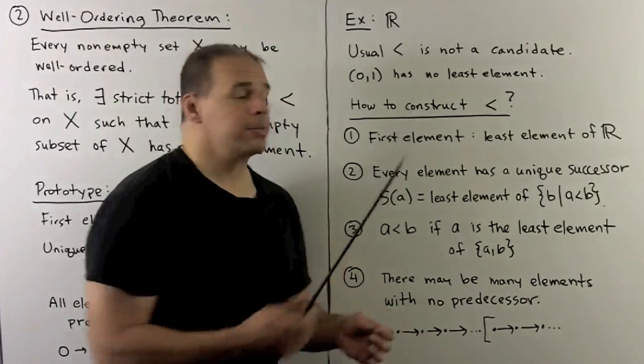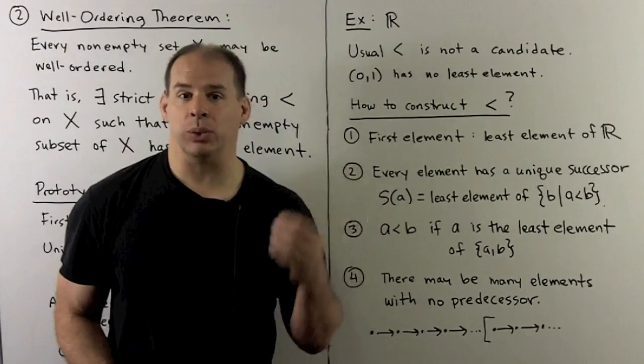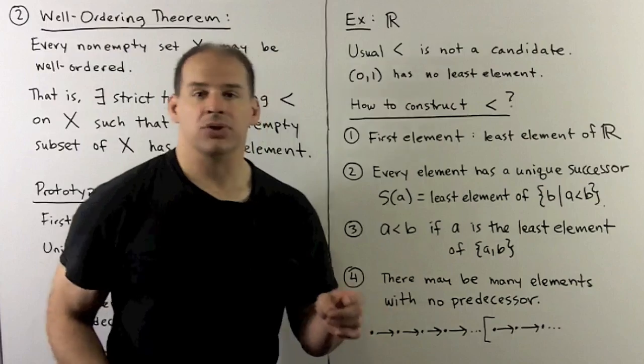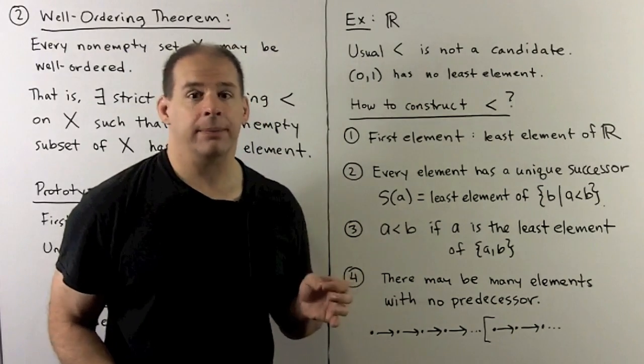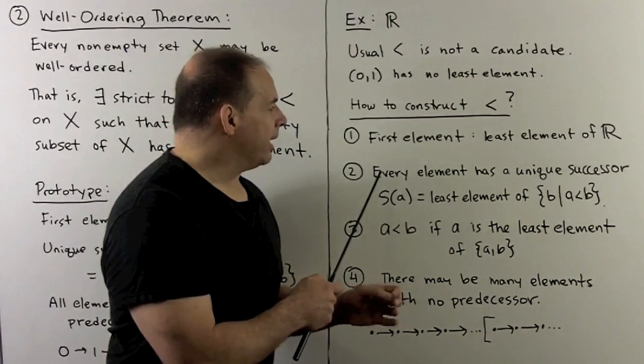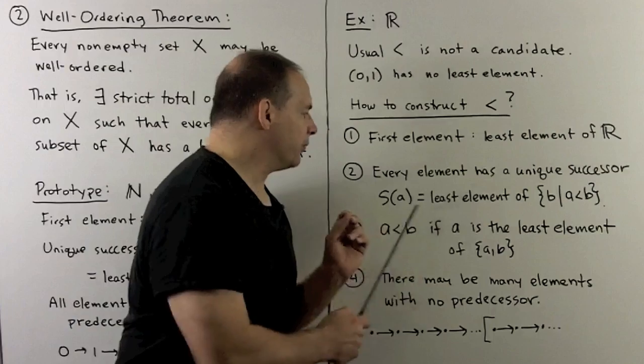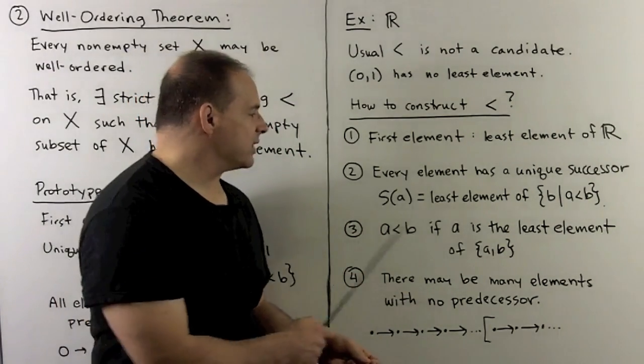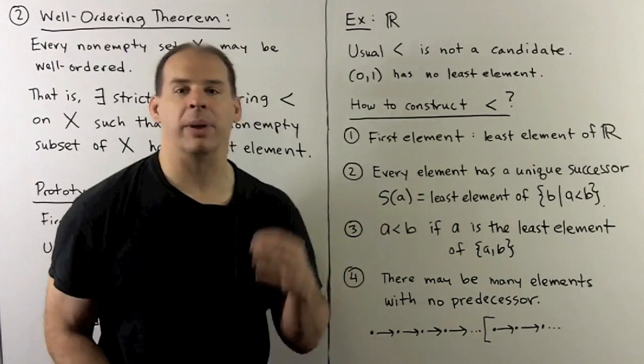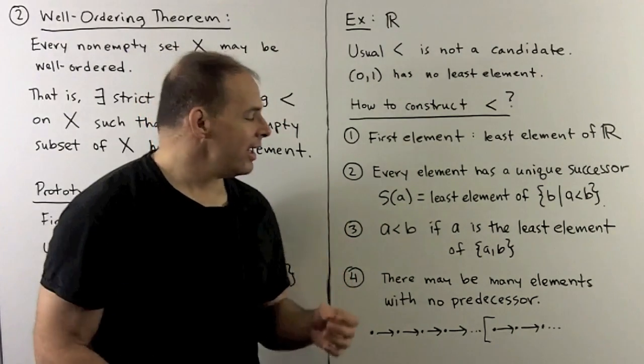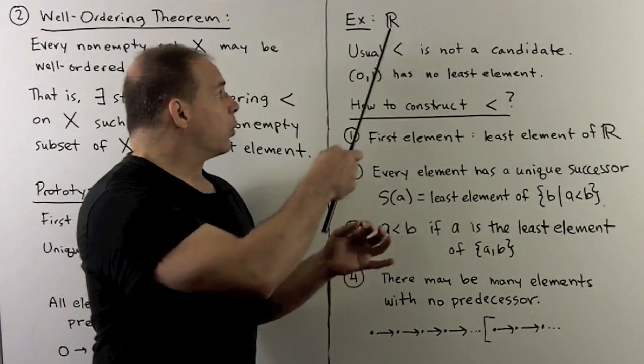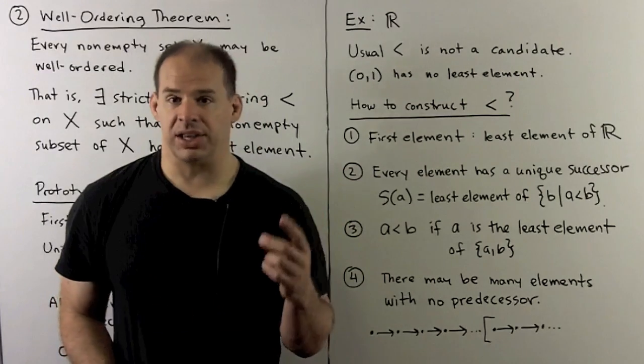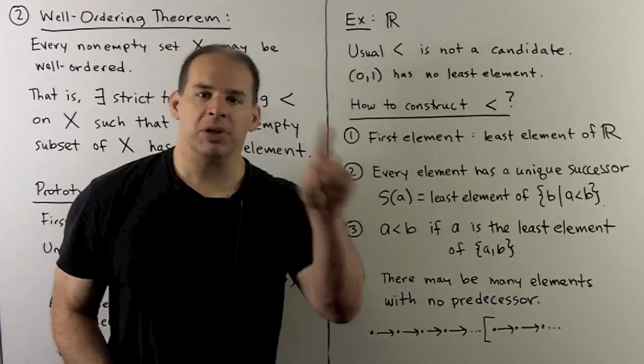If we wanted to attack this, what are we up against? What things do we need? Our well-ordering has to have a first element, the least element for the whole set. Every element has to have a unique successor. If we wanted to compare elements, I would say a is less than b if a is the least element of the pair {a,b}. Finally, we're working with an uncountable set, we're going to need to have many elements with no predecessor.